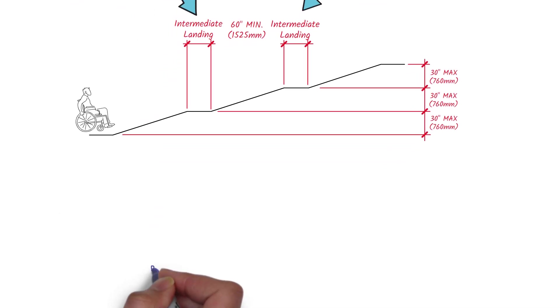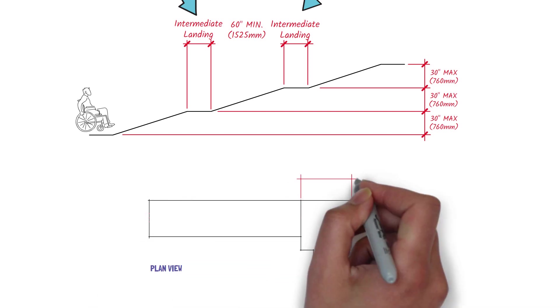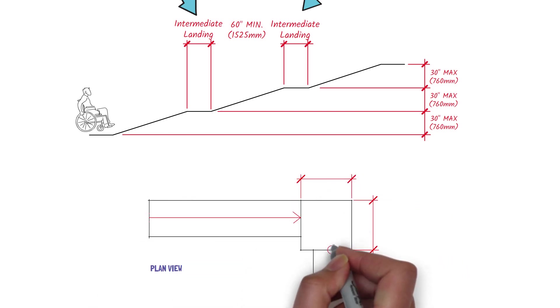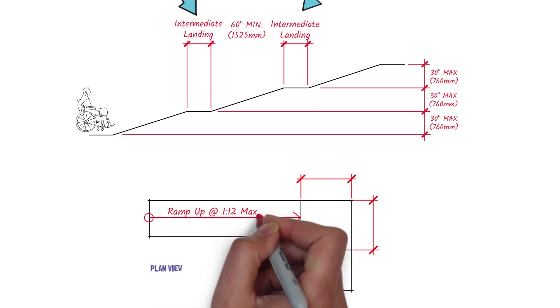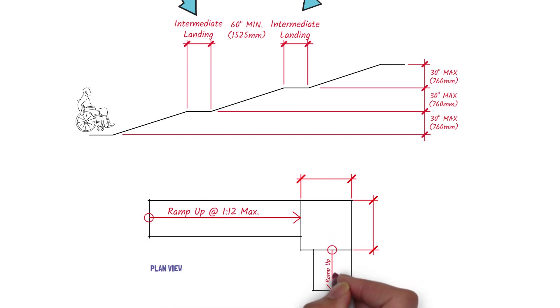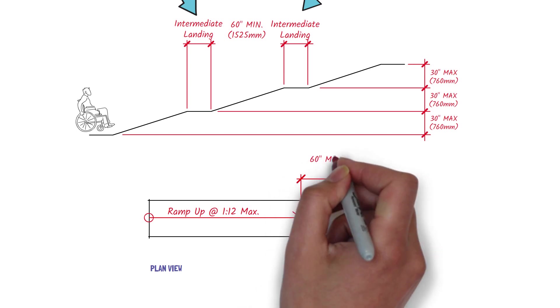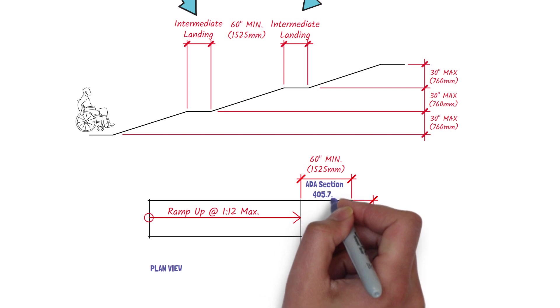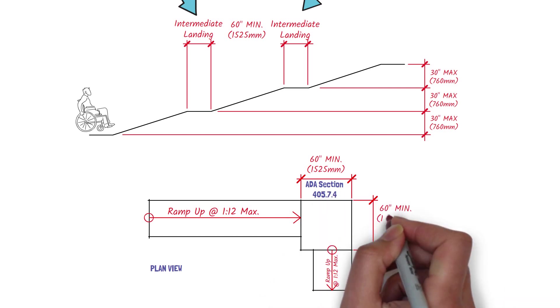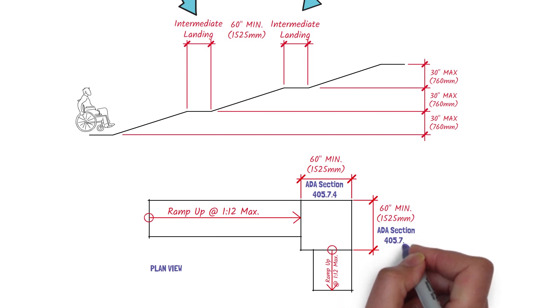But having a ramp that is straight may not always work due to space limitations, and so what is often needed is for ramps to change direction, such as the example that is drawn here. Earlier, we said that landings need to be as wide as a ramp, and that also applies to intermediate landings. However, if the ramp turns like we see here, per ADA Section 405.7.4, the landing must be 60 inches by 60 inches minimum.